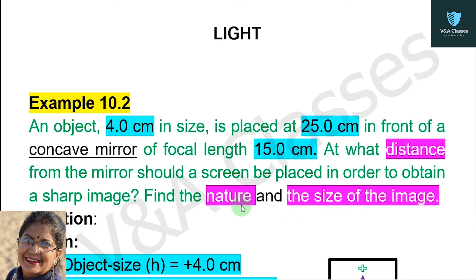So the object size is 4 cm, placed in front of a mirror. The focal length is 15 cm. We need to find the distance from the mirror at which the screen should be placed to locate the image. We also need to find the nature and size of the image. Let's start the solution with the given values.